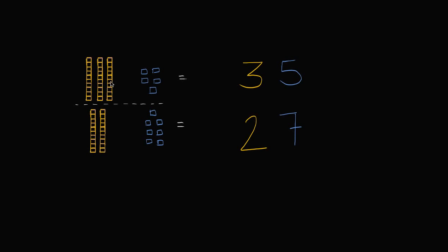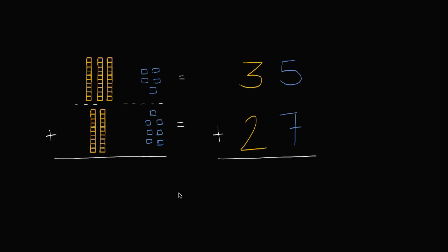So I have two numbers here. The top number, I have one, two, three tens, and one, two, three, four, five ones — three tens, five ones, or thirty-five. The second number, I have two tens and one, two, three, four, five, six, seven ones — two tens and seven ones. Now I want to add these two numbers together, thirty-five plus twenty-seven, or add all of these blocks together. So let's start in the ones place right over here. I have five ones here and seven ones here. So if I add five ones to seven ones, how many ones am I going to get?